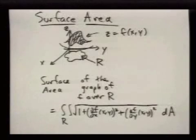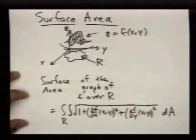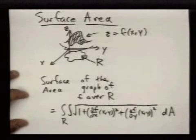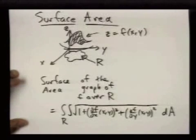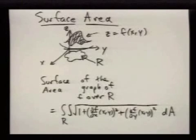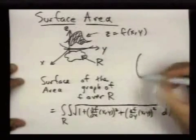This long thing here, I have the double integral over the region R of the square root of 1 plus the partial with respect to x squared plus the partial with respect to y squared. And this should somehow resemble the formula for finding arc length, if you remember that from one variable. Let me just write that to the side.